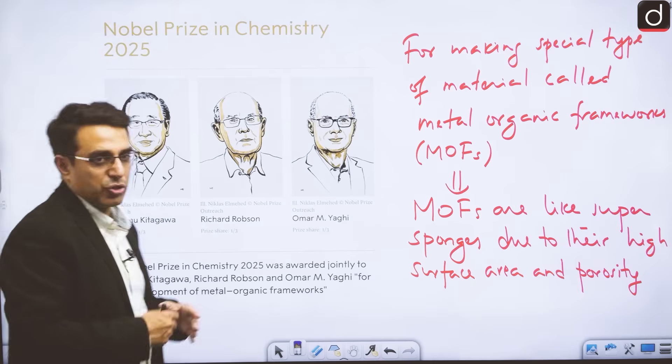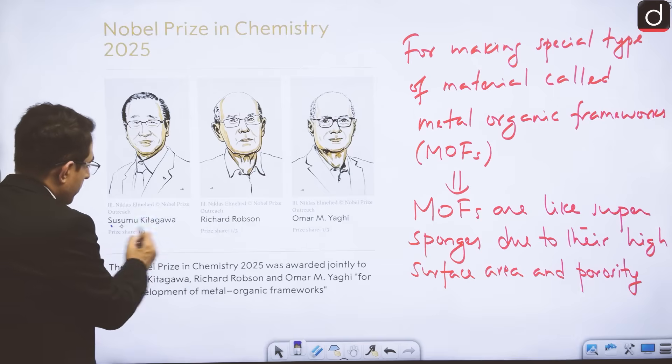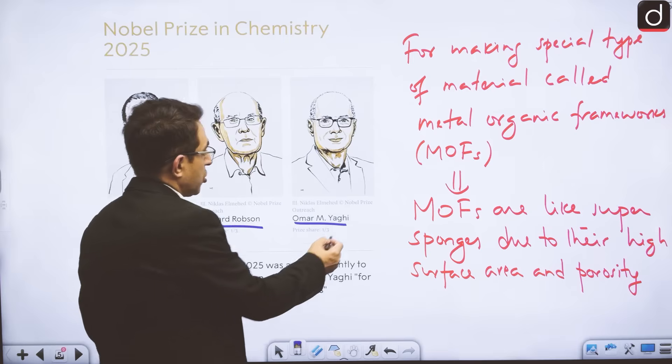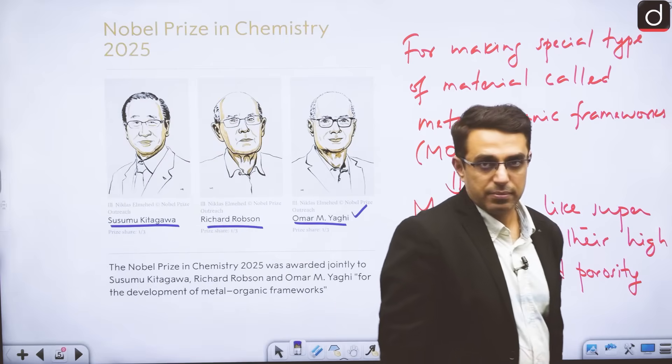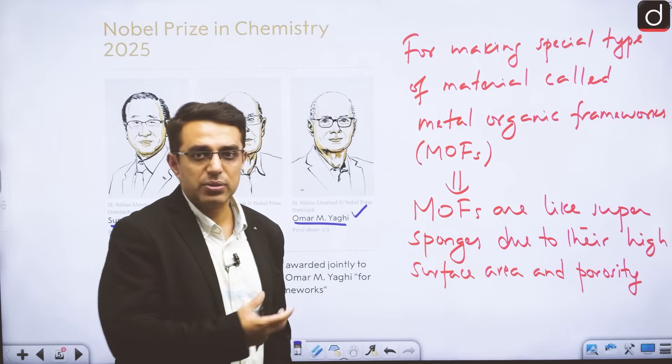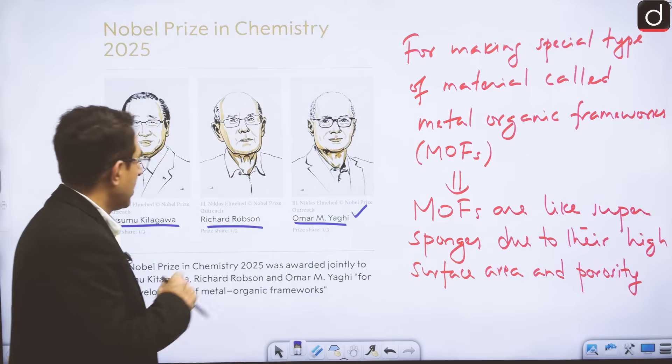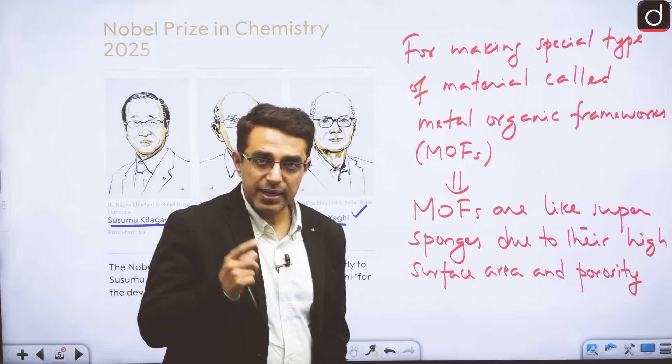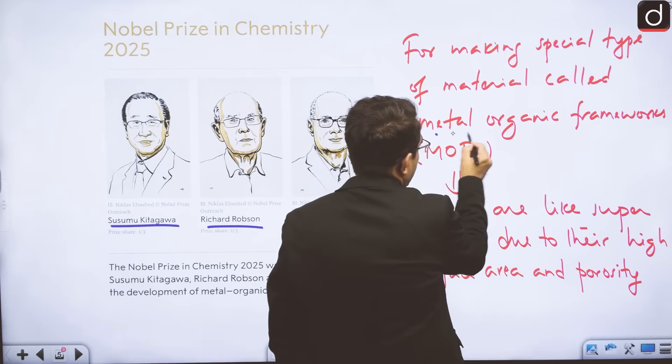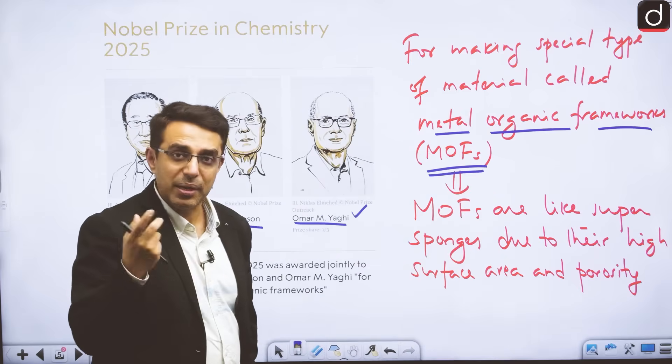Now we come to Nobel Prize in chemistry. Nobel Prize in chemistry has again been given to three scientists: Susumim Kitagawa, Richard Robson, and Omar Yagi. Incidentally, Mr. Omar Yagi is a Palestinian. Because of the Israel-Palestine issue, this was also in news that Mr. Yagi has received the Nobel Prize for chemistry and he comes from Palestine. The Nobel Prize for chemistry has been given for the discovery of a material called metal-organic frameworks, and they also have a very important application.